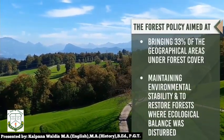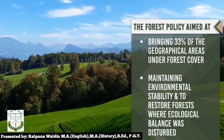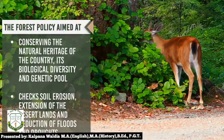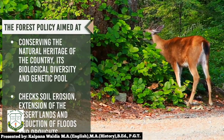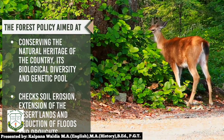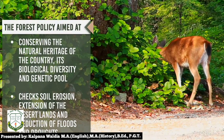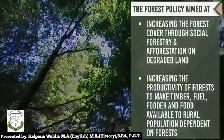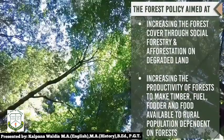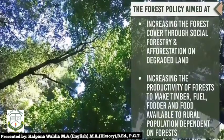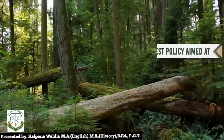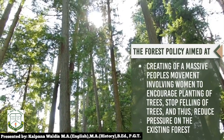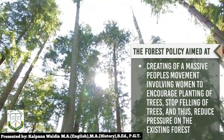The aims of the forest policy include: bringing 33 percent of geographical area under forest cover; maintaining environmental stability and restoring forests where ecological balance was disturbed; conserving the natural heritage, biological diversity, and genetic pool; checking soil erosion, extension of desert lands, and reduction of floods and droughts; increasing forest cover through social forestry and afforestation on degraded lands; increasing the productivity of forests to make timber, fuel, fodder, and food available to the rural population; and creating a mass people's movement involving women to encourage plantation of trees, stop felling of trees, and reduce pressure on existing forests.